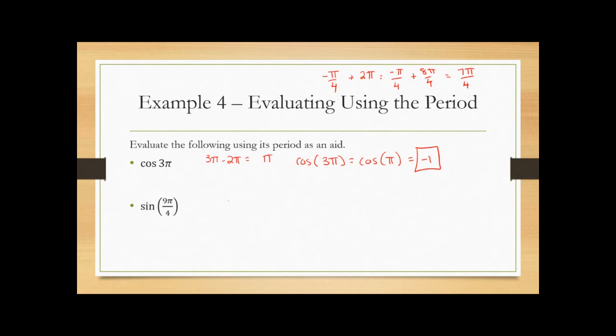If a problem does not have the degree symbol, assume it's in radian mode. Most of the time you'll want your calculator in radian mode. The most common error causing wrong answers is having the calculator in the wrong mode. Radians tend to work out a little nicer for mathematicians.